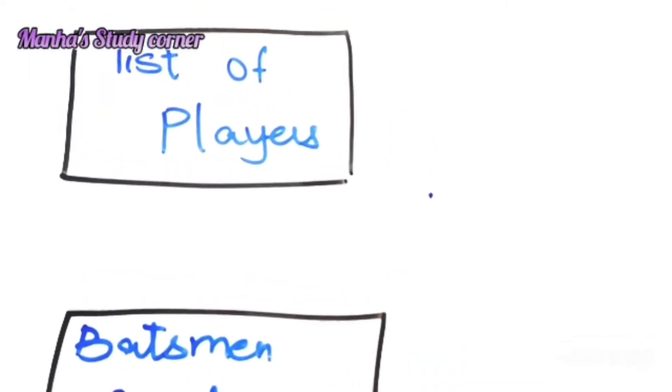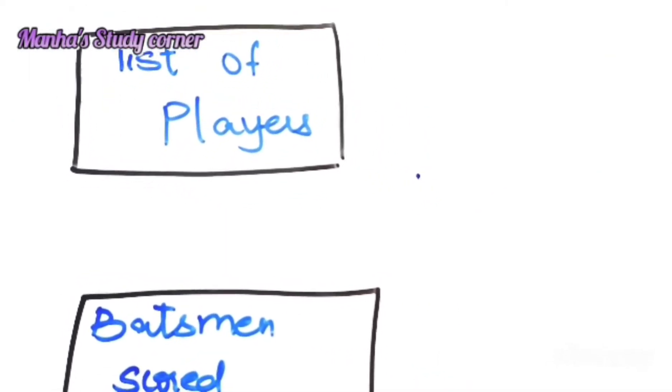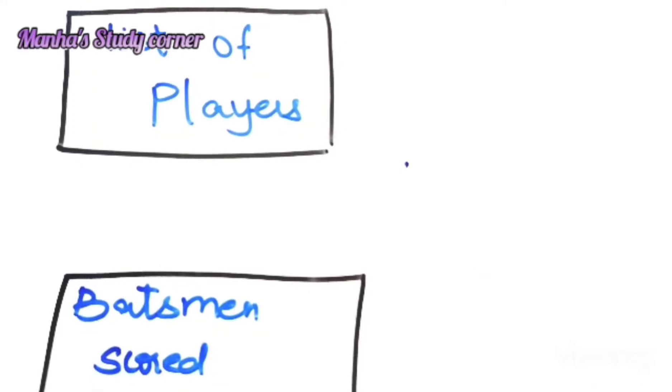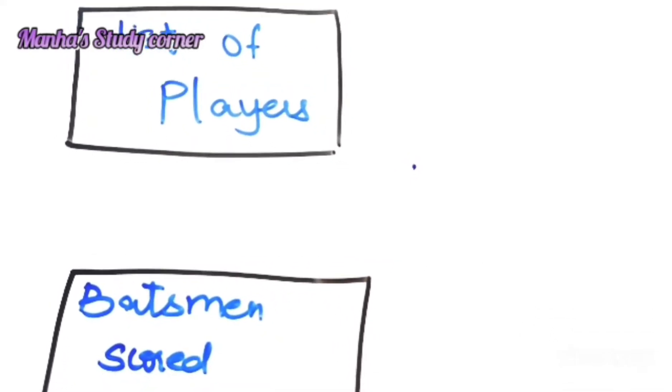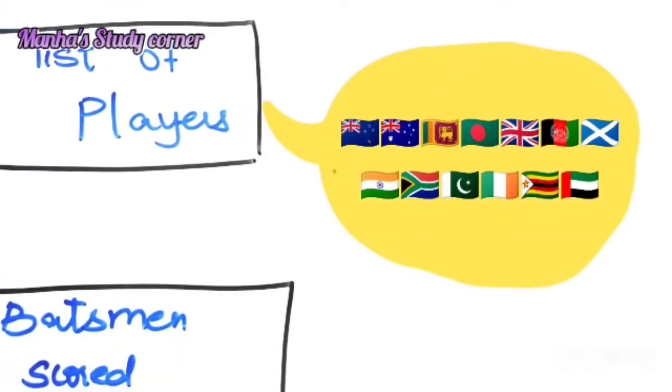The first one was the list of players from all the 14 countries. Pretty simple, right? You can easily fill this out. Let's try filling this out. Not very difficult. Here are all the 14 countries and the players.